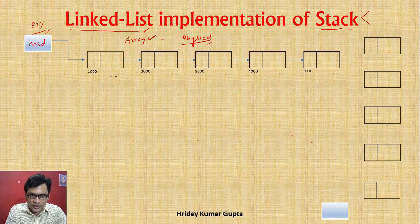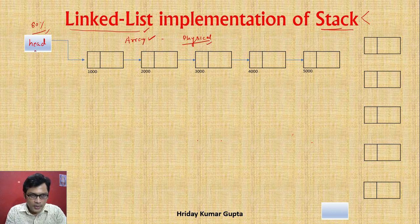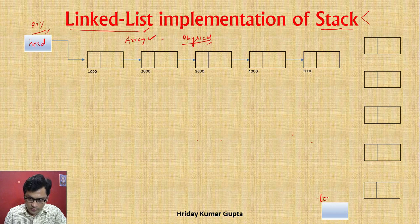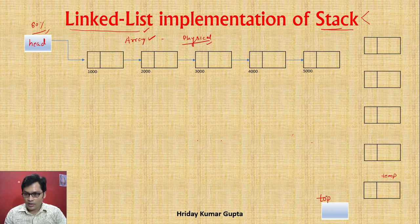What we have done is taken the singly linked list diagram — written horizontally — and arranged it vertically, just like a stack. Earlier we had 'head'; now I will use the word 'top' instead. That is the first difference. In linked list we kept head fixed, made a copy ptr, and moved ptr forward.